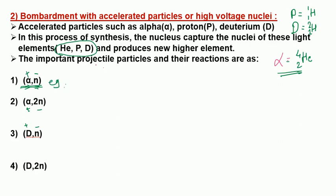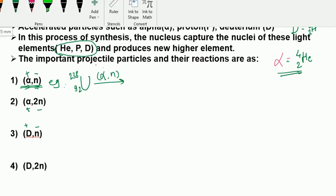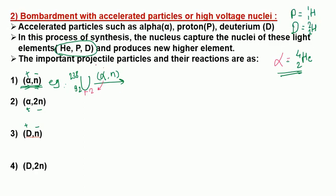Example of α,n reaction: naturally occurring uranium-238 (atomic number 92) bombarded with one alpha particle while one neutron is lost. Atomic number increases by 2 (from alpha) giving 94, and mass number increases by 4 minus 1 neutron, giving a net increase of 3, so mass number becomes 241. The new species formed is plutonium-241, atomic number 94.